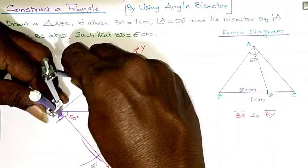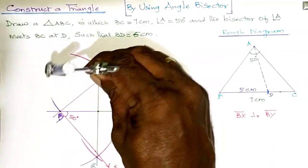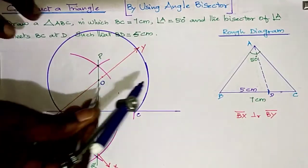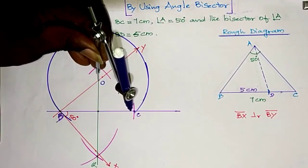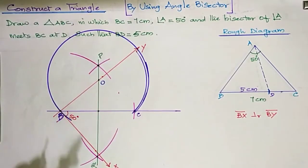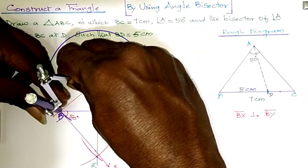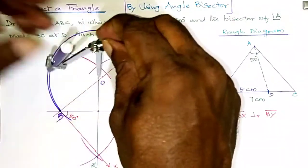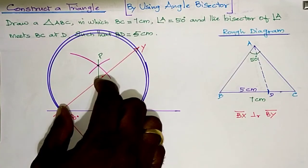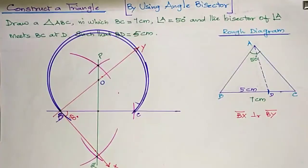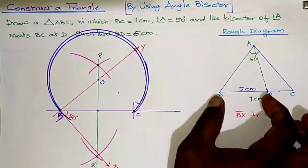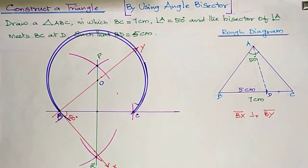With center O and radius OB, draw a circle sector. Using the OB measurement as radius, draw the circle sector. Then mark BD equal to 5 cm on the base BC.